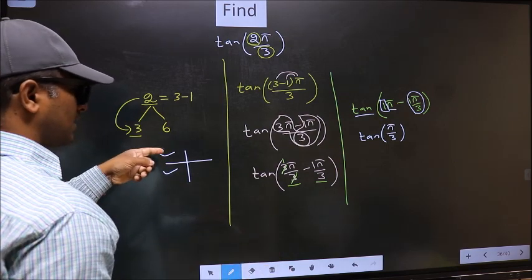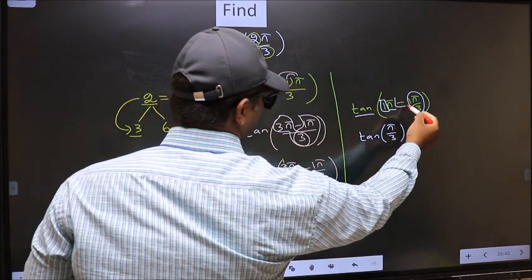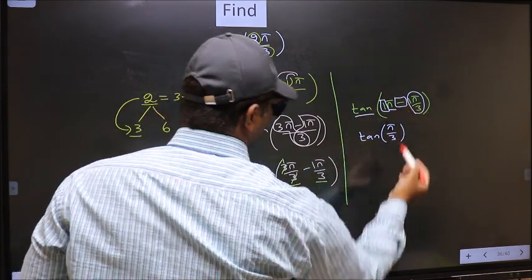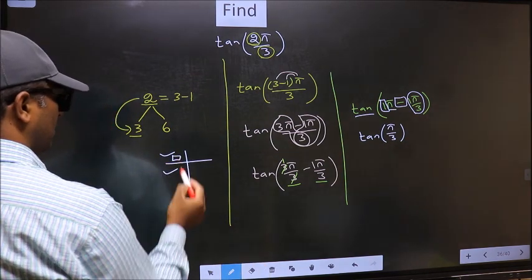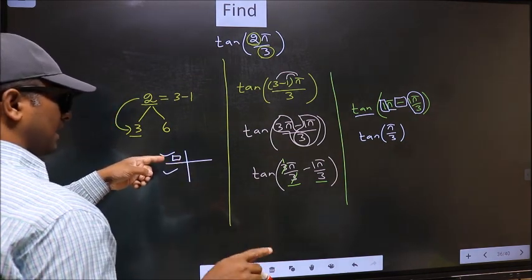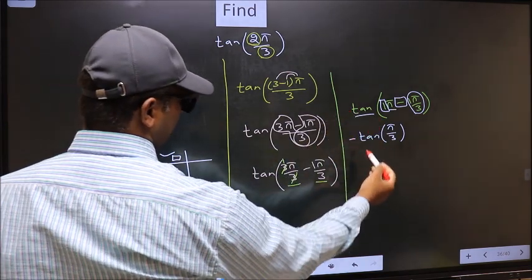So, now to select the quadrant, we should look at this symbol. Here we have negative. That means, angle lies in the second quadrant. And in the second quadrant, tan is negative. So, we should put negative.